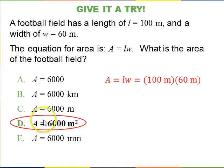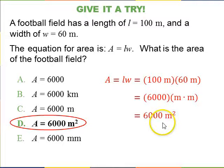Okay. So, hopefully you chose D, meters squared. So, you've got meters times meters. The idea is 100 times 60 is 6,000, and meters times meters is meters squared. So, meters squared is the unit of area.